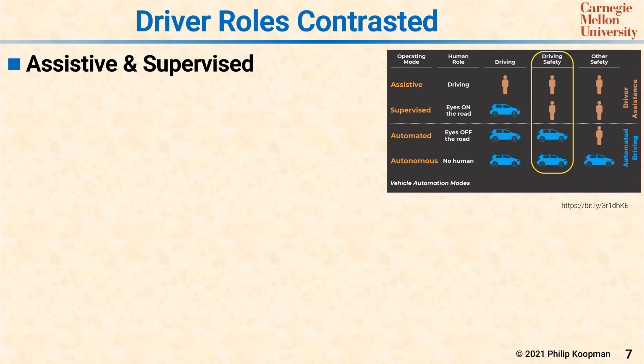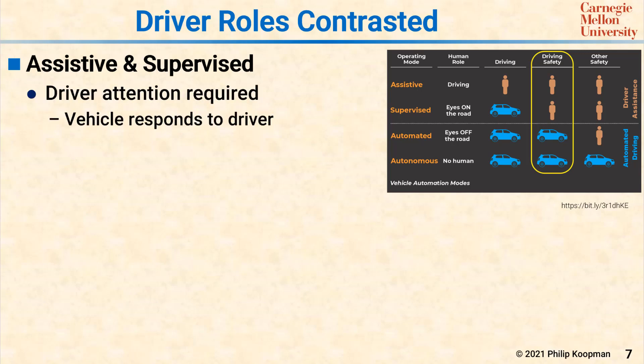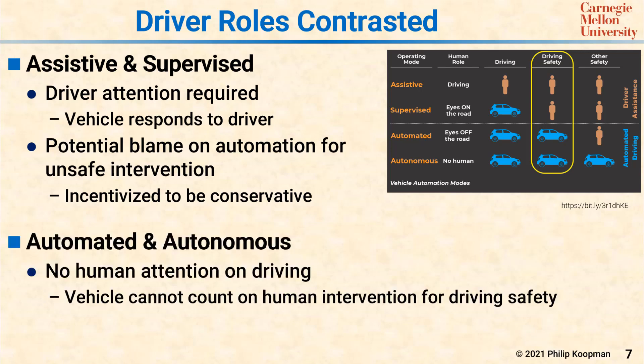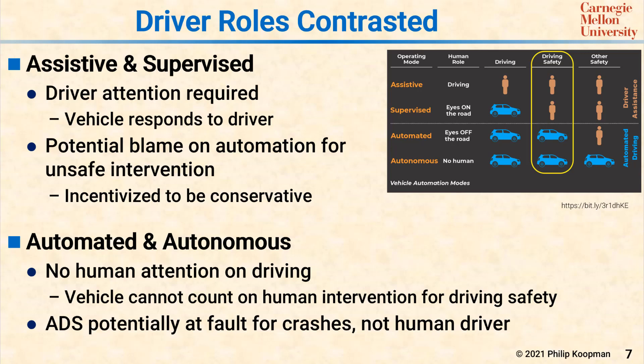In the Vehicle Automation Modes approach, there's a clear distinction between when a person is responsible for driving safety and when the vehicle is. In assistive and supervised modes, there is a person in charge of driving safety — that person must pay attention continuously and is ultimately responsible. In automated and autonomous modes, the person is not tasked with any aspect of driving safety; rather, it is entirely on the vehicle to make sure that all driving is done safely.